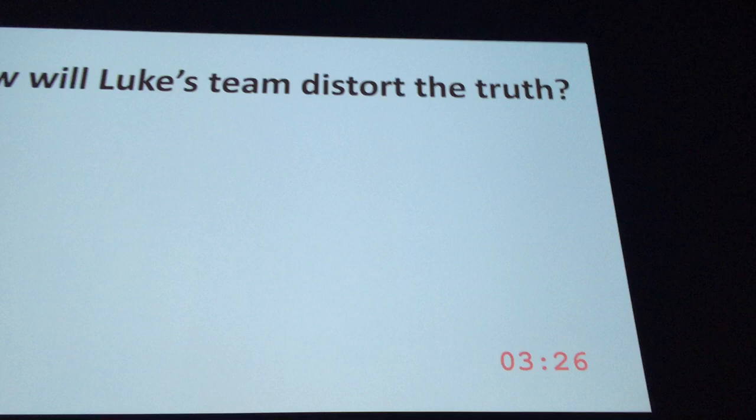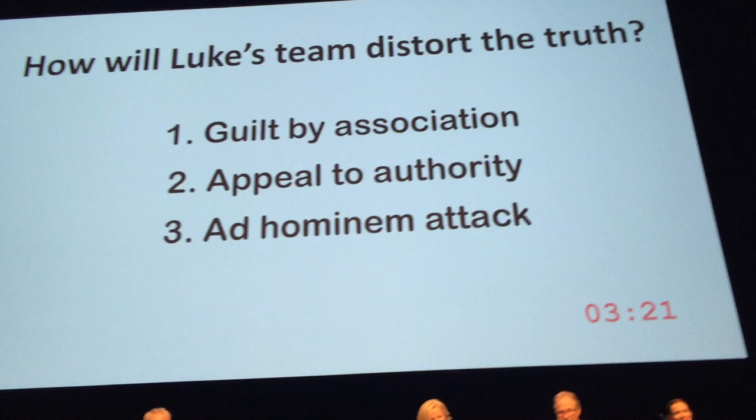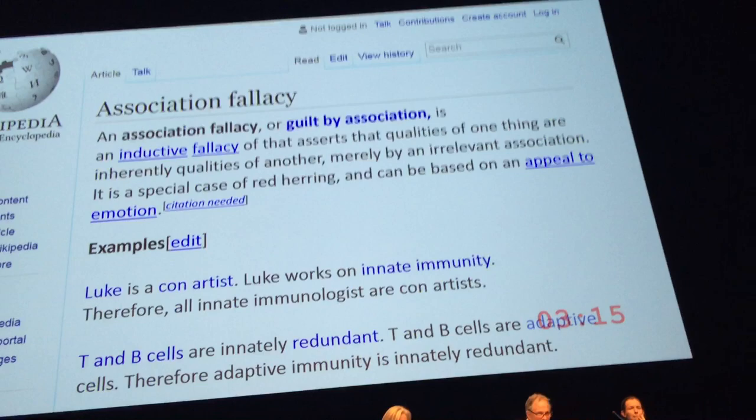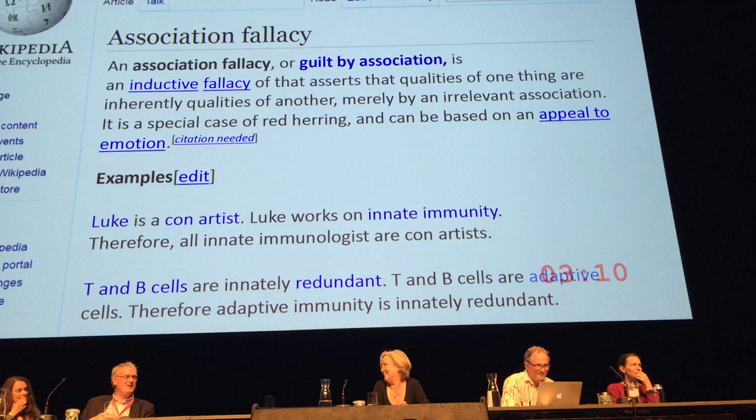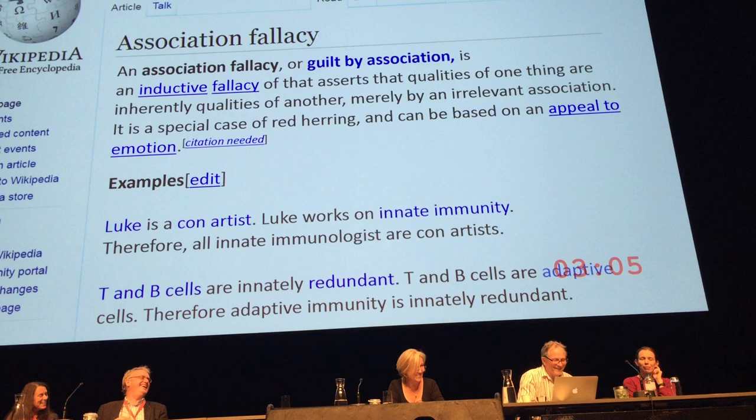I'm prepared to tell you how Luke's team is going to distort the truth: guilt by association, appeal to authority, and ad hominem attack. So what is guilt by association? It's a fallacy. For example, Luke is a con artist, Luke works on innate immunity — and they would conclude that all innate immunologists are con artists.